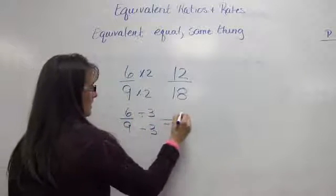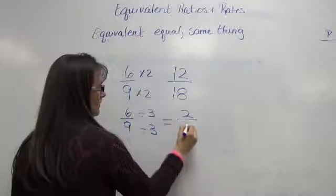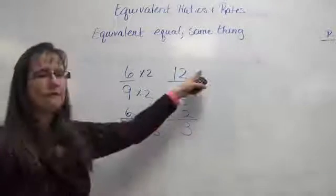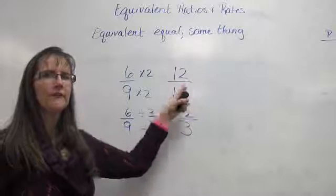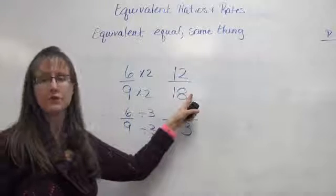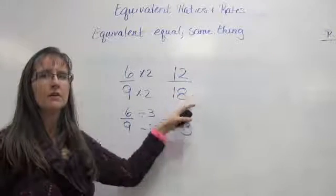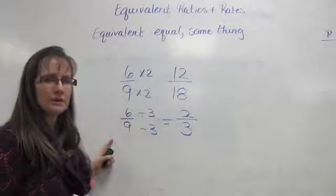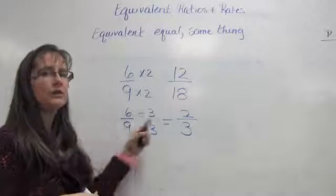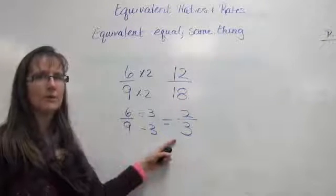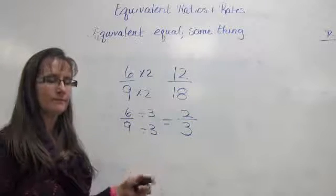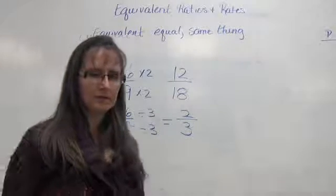We'll divide by 3. And that's going to give me an answer of 2/3. Again, don't find your equivalent rate off of the rate that you just found or the ratio you just found. Go back to your original ratio and find a new equivalent ratio from there.